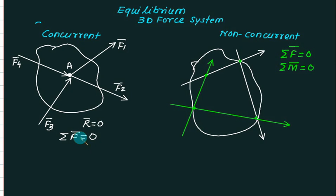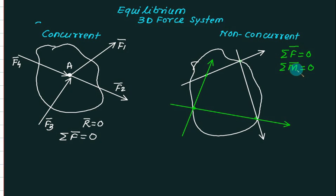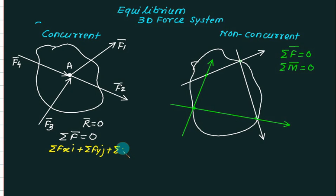F equal to zero means the body will not translate. A concurrent system tends to translate; a non-concurrent system tries to translate and rotate. So the conditions of equilibrium: for concurrent, only one condition; for non-concurrent, two conditions - that is sigma F equal to zero and sigma moment equal to zero. Sigma F bar equals summation of Fx·i plus summation of Fy·j plus summation of Fz·k.